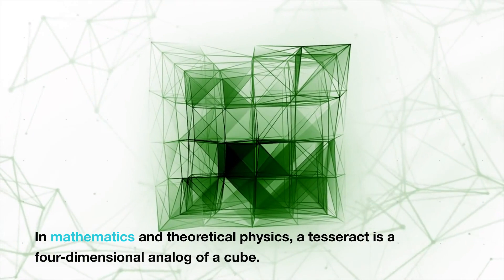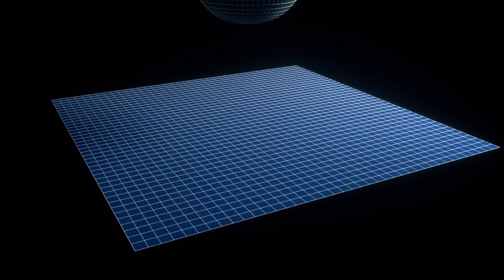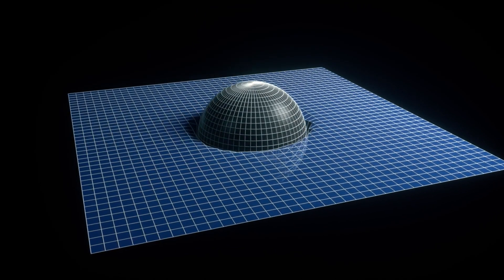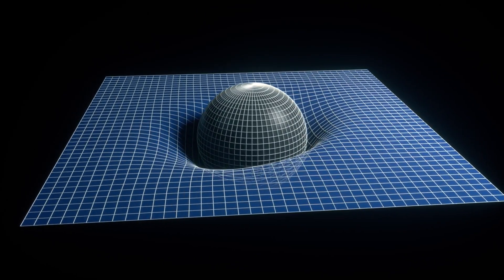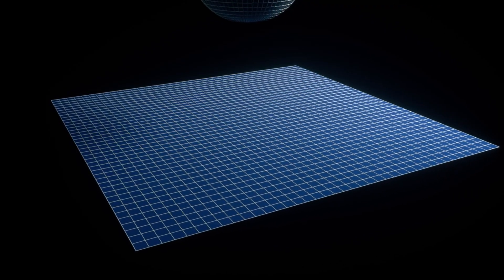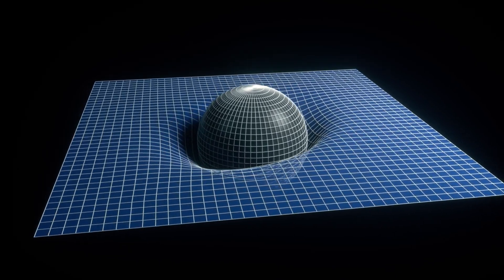In mathematics and theoretical physics, a tesseract is a four-dimensional analog of a cube. While we live in a three-dimensional world, with time often considered the fourth dimension in the context of space-time, the idea of higher dimensions is a field of study in theoretical physics, particularly in string theory and related areas.